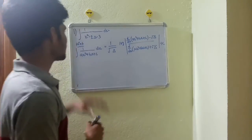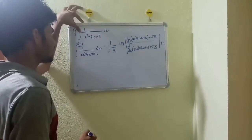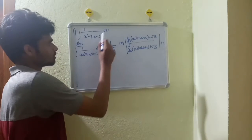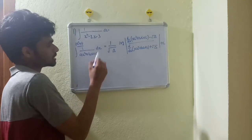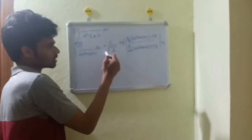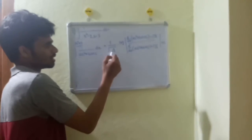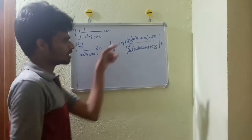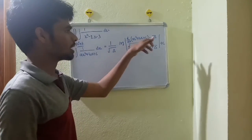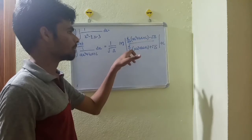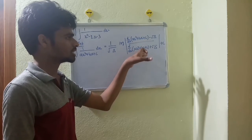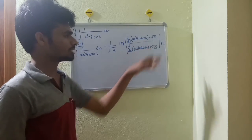Next problem: integration of 1 by (x² minus 2x minus 3) dx. Same formula — 1 by root(delta) log of (d/dx of ax² + bx + c minus root(delta)) by (d/dx of ax² + bx + c plus root(delta)) plus c.